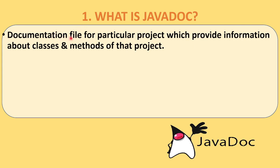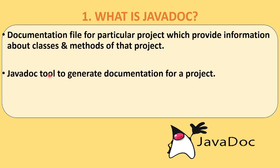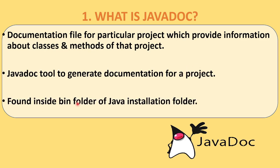Who generates this documentation file automatically? Javadoc does. Every Java project will have classes, and inside a class you might be using different methods. So for those methods and classes, the Java documentation is generated. It is a tool to generate documentation for a particular project, and it is found inside the bin folder of the Java installation folder.